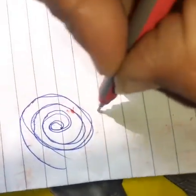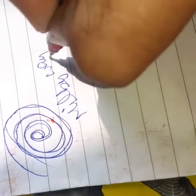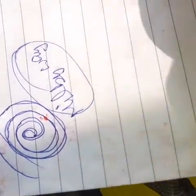The Milky Way galaxy is a spiral galaxy. The solar system, including the Earth and the other planets, is present within the Milky Way galaxy.